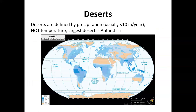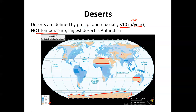The definition of a desert is usually less than 10 inches of rain every year — defined by precipitation, not temperature. The largest desert, in fact, is Antarctica, which is quite cold. We also have very large deserts in the Sahara, American Southwest, Australia, the Tibetan Plateau, and other areas that roughly coincide with 30 degrees north and south.